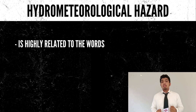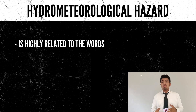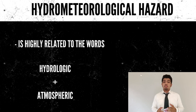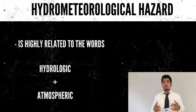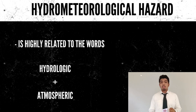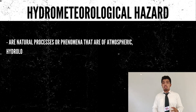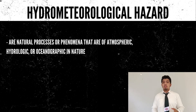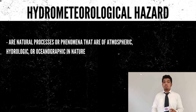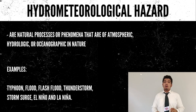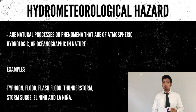Hydrometeorological hazard is highly related to the words hydrological and atmospheric. Hydrometeorological hazards are natural processes or phenomena that are atmospheric, hydrologic, or oceanographic in nature. Examples of these are typhoon, flood, flash flood, thunderstorm, storm surge, El Niño, and La Niña.